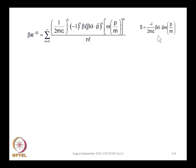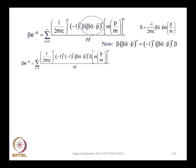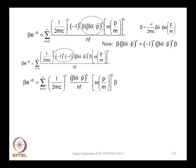Using the identity that (beta·alpha·p)^n = (-1)^n · beta · (alpha·p)^n (which can be verified by matrix multiplication using the explicit block diagonal structure of beta and alpha), the (-1)^n factors combine to give (-1)^{2n} = +1 for all n. This gives a simplified expression for beta·e^{-iS}, and by the same analysis e^{+iS} can also be derived. Multiplying on the right by beta shows that beta·e^{-iS} = e^{+iS}·beta.